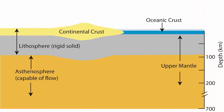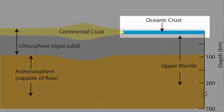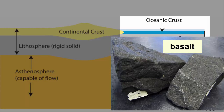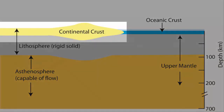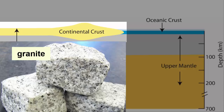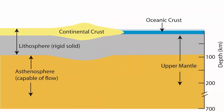Let's look more closely at the crust. It is composed of two kinds. Denser oceanic crust, which is thin and mostly made of a rock called basalt. Its density makes it sink low, which is why it is the crust that underlies the lowest basins on the planet — the oceans. Continental crust is much thicker and less dense than ocean crust. It is made out of many kinds of rocks, but its average composition is similar to that of a rock found on the continents called granite.